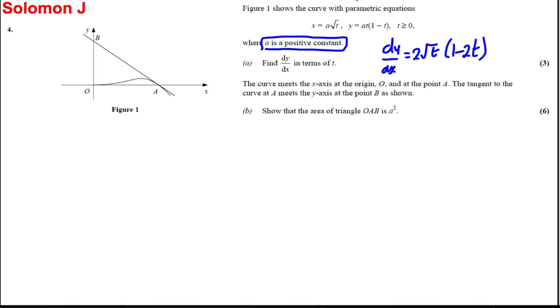At A, y equals 0. So we can solve 0 = at(1 - t). We are told that a is bigger than 0, it's a positive constant, so we can divide both sides by a and write that 0 = t(1 - t), so either t = 0 or t = 1.